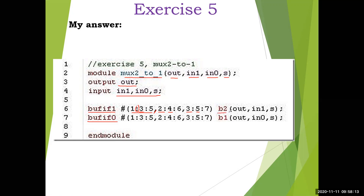Instance B2 is the BUFIF1 gate: OUT, In1, S — when S is 1, In1 is selected. Instance B1 is the BUFIF0 gate: OUT, In0 — when S is 0 this buffer is activated and In0 is passed. That is the only new part here — writing the delay in min:typ:max format, which we had seen in an earlier example and are now applying in this exercise.